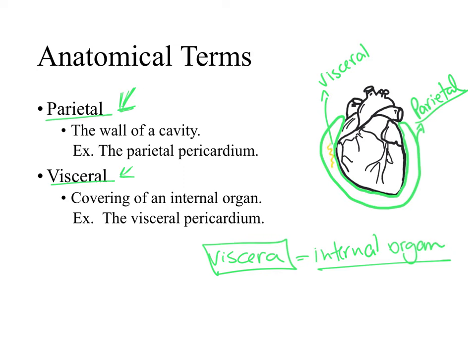Pay attention to this. In between the visceral and the parietal pericardium, we have a space — this space is a cavity surrounding the heart itself. This cavity is named the pericardial cavity. Within the pericardial cavity is where we find the serous fluid, the lubricant, that allows our heart to beat without friction. This serous fluid is produced by the cells that make up the visceral and parietal layers, which in this case are named visceral pericardium and parietal pericardium.